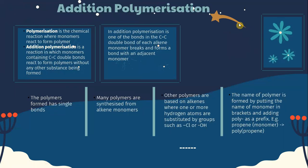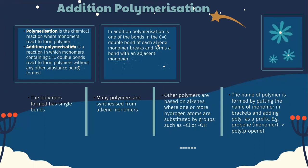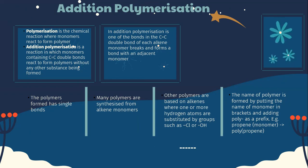Let's look into addition polymerization. Polymerization is the chemical reaction where monomers react to form polymer without any other substance being formed. In addition polymerization, one of the bonds in the C=C double bond of each alkene monomer breaks and forms a bond with an adjacent monomer. The polymers form a single bond, and many polymers are synthesized from alkene monomers.